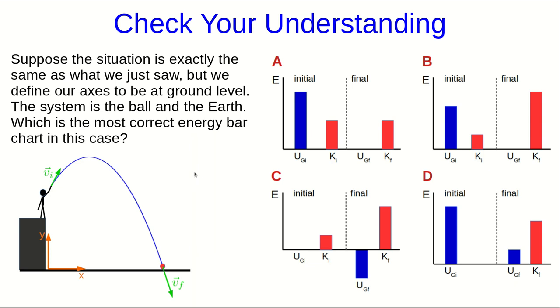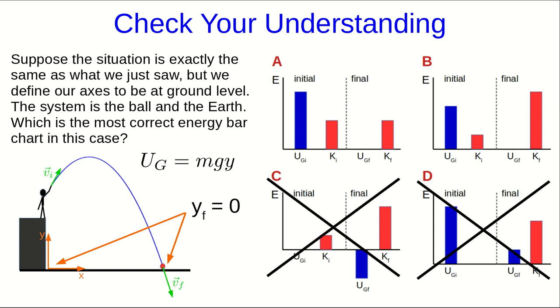So here was the question I asked at the end of the last part of the lecture, where we were thinking about what the energy bar chart would look like if the axes were on the ground. So remember that the gravitational potential energy is mgy, and in this case we are now saying that the final value of y is zero, because we've defined y equals zero on the ground.